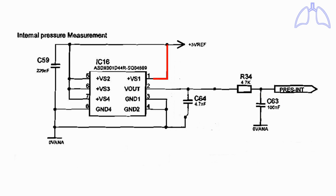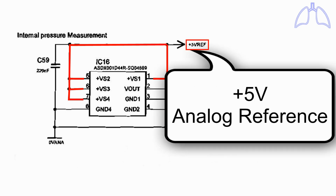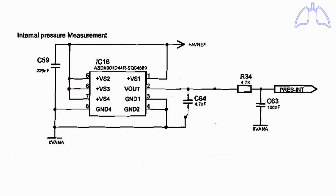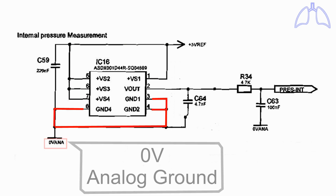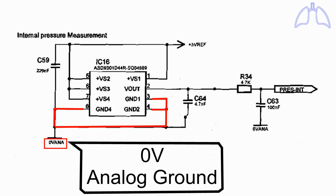Pin 1, 5, 6, and 7 are connected to 5 volts analog reference. Pin 3, 4, and 6 are connected to 0 volt analog ground.